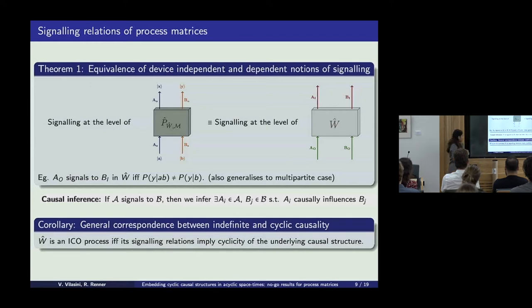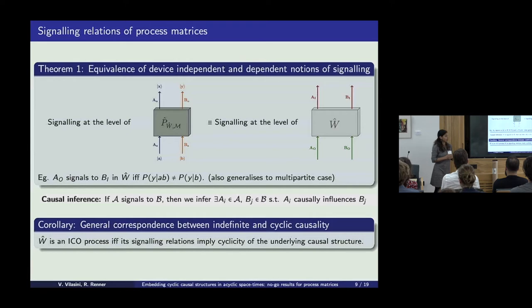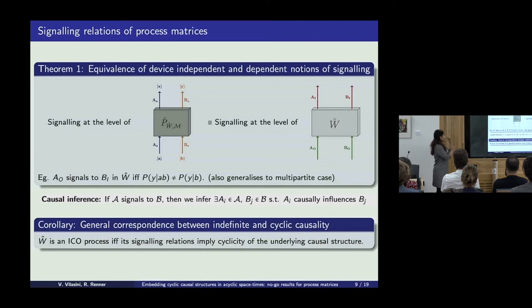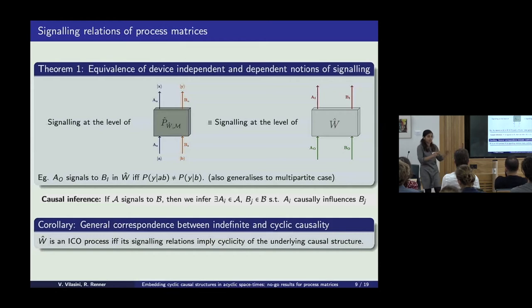This generalizes a result shown in the paper by Robin, John Barrett, and Ognian, that for the case of unitary extendable processes, indefinite causality and cyclic causality are really equivalent concepts. Here we are saying it more generally at the level of signaling relations and for all processes.